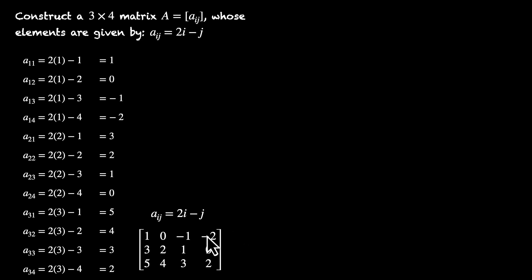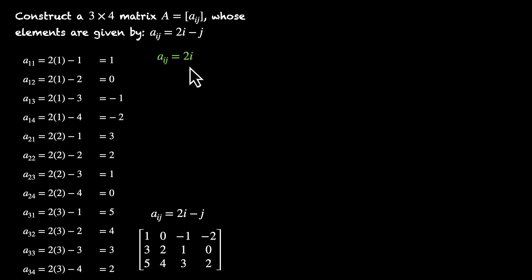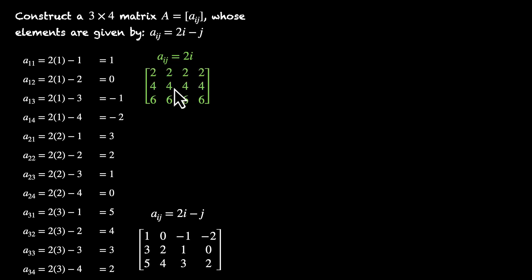Now before we move on, let's build some intuition about the properties of matrices. Another way to solve this would be to find simpler component matrices. What if the formula was just 2i? That means you take the row number and multiply it by 2 — no dependence on column number. The first row would be all 2s, the next row all 4s, and the third row all 6s.